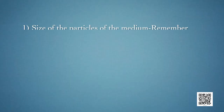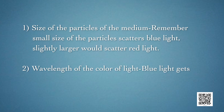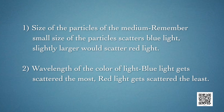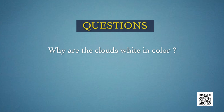The science behind the colours in nature is scattering, which depends on two things: the size of the particles of the medium — small particles scatter blue light, while slightly larger ones scatter red light — and the wavelength of the colour of light, where blue light gets scattered the most and red light gets scattered the least. Try to find out the answer to the question: why are clouds white in colour?